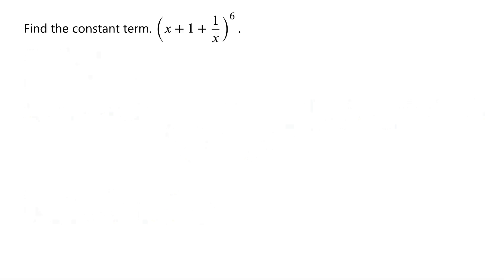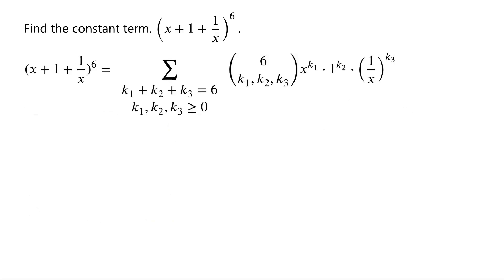For the expression x plus 1 plus 1 over x, all to the power of 6, m equals 3 and n equals 6. So the expression is equal to the sum of the terms with the sum of three non-negative integers k1, k2, and k3 equals 6, times 6 choose k1, k2, k3, times x to the power of k1, times 1 to the power of k2, times 1 over x all to the power of k3.